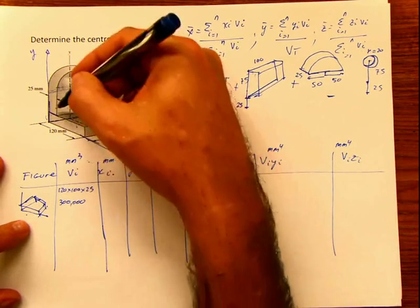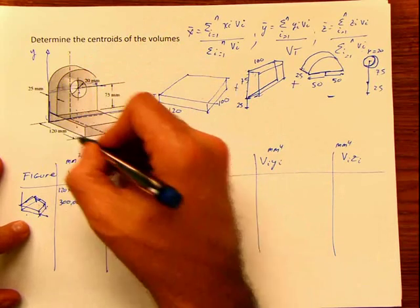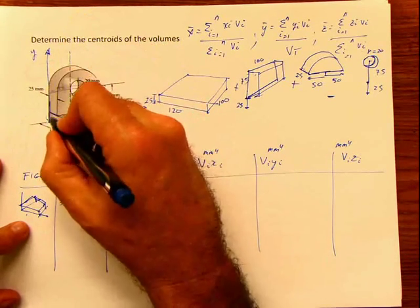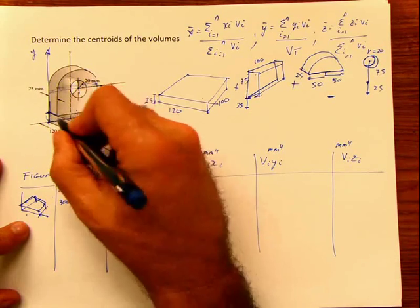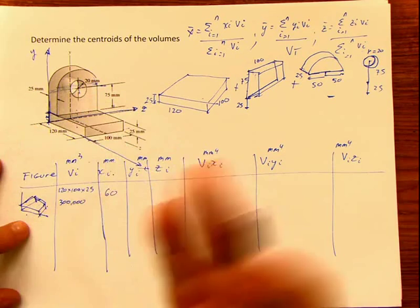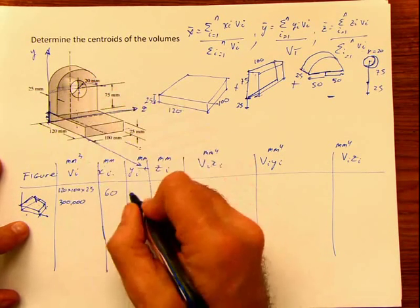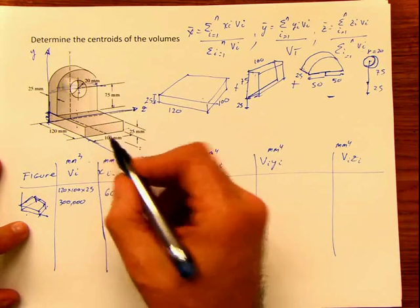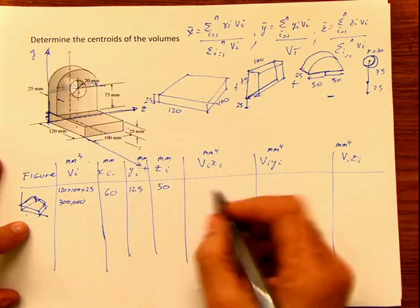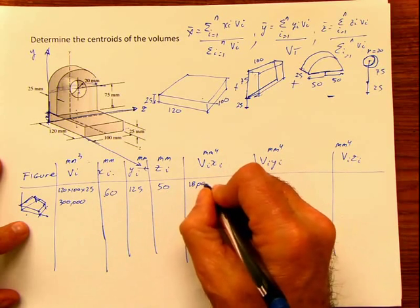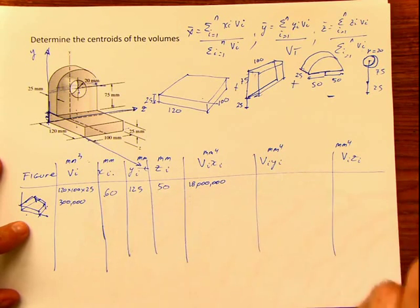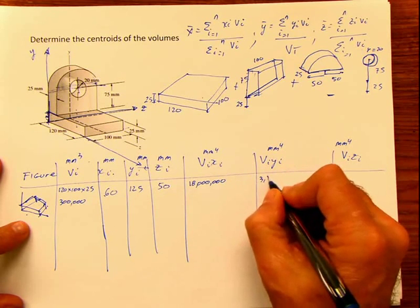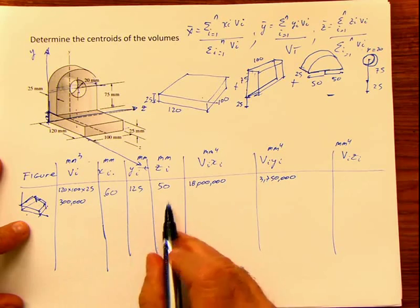For the x-coordinate of Figure 1: this dimension is 25, so half is 12.5. In z, it's symmetric, so half of 100 is 50. In x, half of 120 is 60. The products are: V·x = 300,000 × 60 = 18,000,000; V·y = 300,000 × 12.5 = 3,750,000; V·z = 300,000 × 50 = 15,000,000.